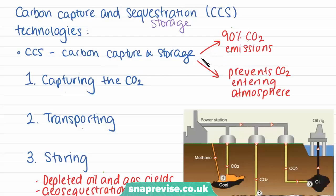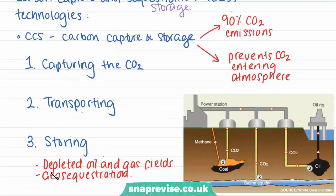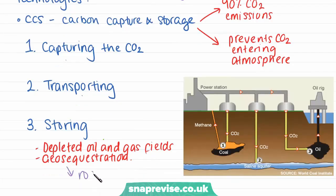Carbon capture and storage involves capturing 90% of CO2 emissions — for example, from a power station or a factory — preventing this carbon dioxide from entering into the atmosphere, because it's when CO2 enters the atmosphere that we get a global warming effect. The stages of carbon capture and storage are firstly capturing the CO2, then transporting it to its storage place. Usually this carbon dioxide is either stored in depleted oil and gas fields, or is geo-sequestrated, meaning it's stored underground in rocks. So instead of CO2 being released into the atmosphere, it is piped into oil fields, coal fields, or into the rock below, stopping it from escaping into the atmosphere.